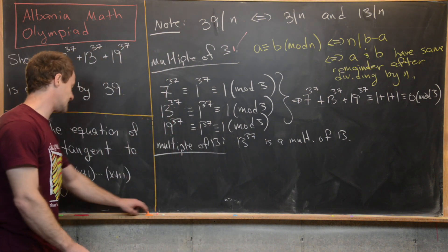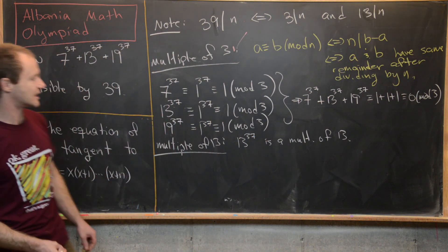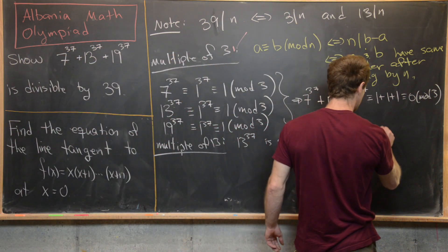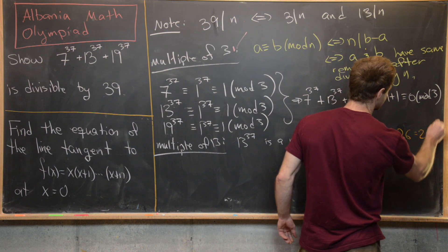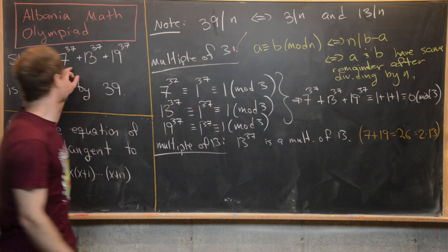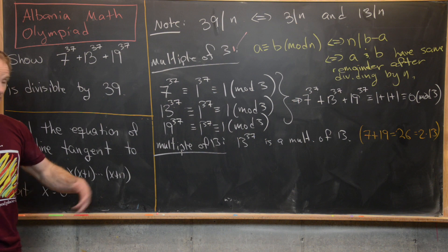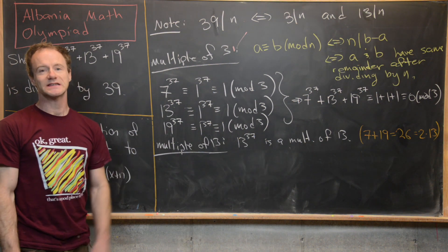And then another hint built into the structure here is that 7 + 19 equals 26, which is 2 times 13. So if we take the sum of 7 and 19, we get a multiple of 13. Now, as I see it, there's like an easy way to finish this thing off.